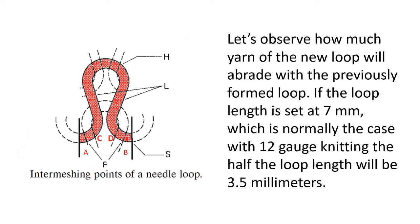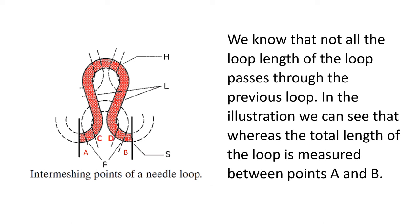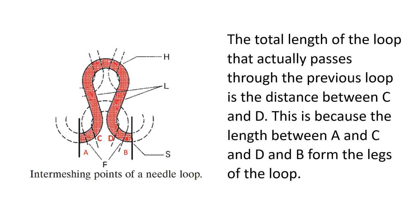Let's observe how much yarn of the new loop will abrade with the previously formed loop. If the loop length is set at 7 millimeters, which is normally the case with 12 gauge knitting, the half the loop length will be 3.5 millimeters. We know that not all the loop length of the loop passes through the previous loop. In the illustration we can see that whereas the total length of the loop is measured between points A and B, the total length of the loop that actually passes through the previous loop is the distance between C and D.